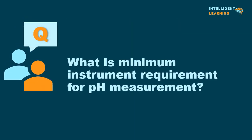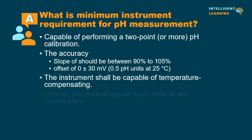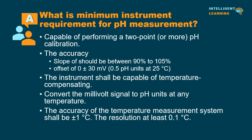What is the minimum instrument requirement for pH measurement? The measurement system shall be capable of performing a two-point or more pH calibration. The accuracy of the pH measurement system: calibrated slope should be between 90% to 105%, and an offset of 0 ± 30 millivolt, 0.5 pH units at 25 degrees Celsius, as per United States Pharmacopeia. The instrument shall be capable of temperature compensating the pH sensor measurement to convert the millivolt signal to pH units at any temperature. The accuracy of the temperature measurement system shall be ± 1 degree Celsius, and the resolution shall be at least 0.1 degrees Celsius.